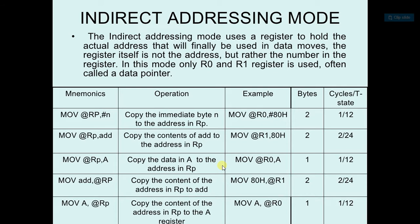So it's a little bit complicated type of addressing mode, but there is one such type. For example, MOV @R0, A — what it will do is copy the data in A to the address in R0. So it will copy the data to A from the memory address provided by R0.